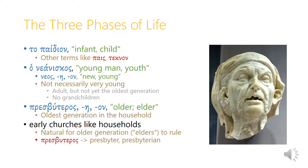In the ancient world, people generally thought of life as being divided into three phases: infancy and childhood, then being a young adult, and then being an older adult. So topaidion means 'infant' or 'child,' and together with terms like pais and technon that we've already seen, topaidion was the term for this first phase of life, before adulthood.